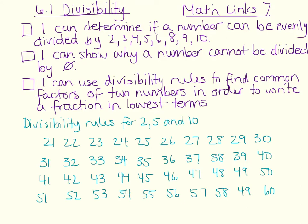We're going to start with the divisibility rules for 2, 5, and 10. I want you to copy the chart on this slide into your notebooks. Color each number that is divisible by 2 yellow, circle each number that is divisible by 5, and put an X through each number that is divisible by 10. Pause the video, do that, and then come back.